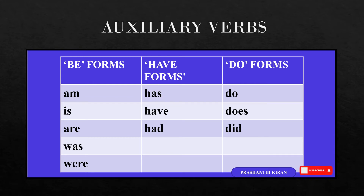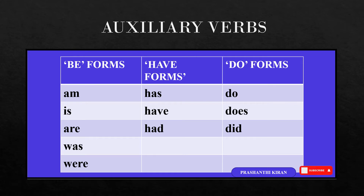Be forms: am, is, are, was, were. Have forms: has, have, and had. Do forms: do, does, did.